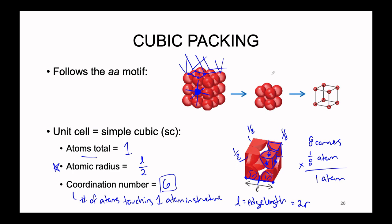This cubic packing pattern is not the only way that atoms can arrange themselves. It's actually not very space-efficient to have every atom stacked directly on top of each other in this AA motif. There are other ways we can arrange these atoms, and we're going to talk about two more today. There are actually 14 different ways that crystals can stack, but we're just going to be talking about the three most simple and also most common ways that these crystals take form.